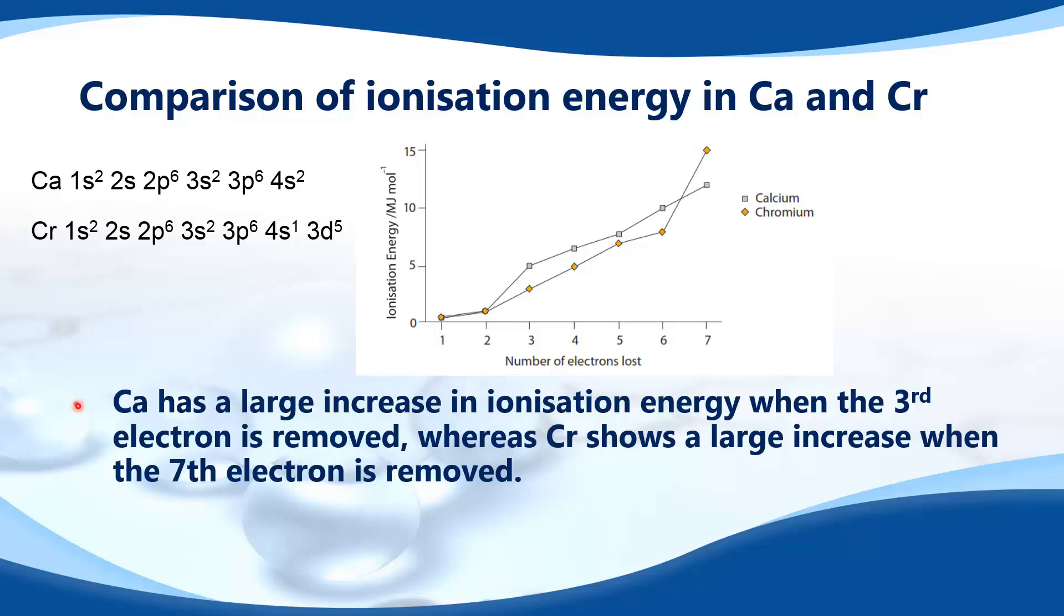To summarize, calcium has a large increase in ionization energy when the third electron is removed, whereas chromium shows a large increase when the seventh electron is removed. This is due to the closeness in energy of the 3d and 4s sublevels, and this is the reason why transition metals have variable oxidation numbers.